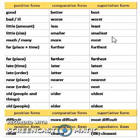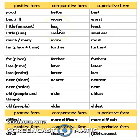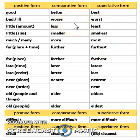There are certain exceptions. Usually, when we add ER it becomes comparative, and when we add EST it becomes superlative — that was the normal case. In usual cases, with the positive form, if ER is attached it becomes comparative, and if EST is attached it becomes superlative.